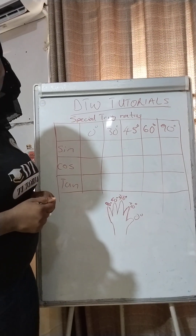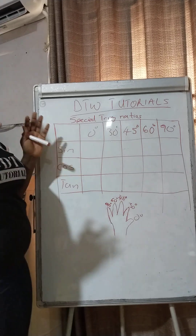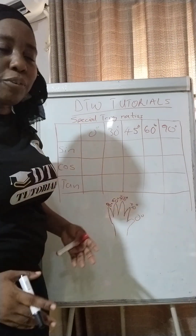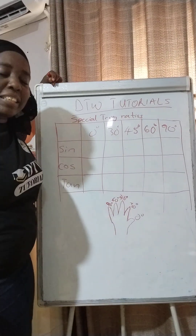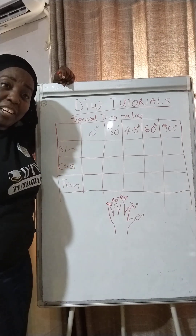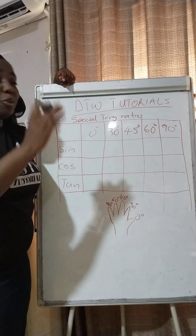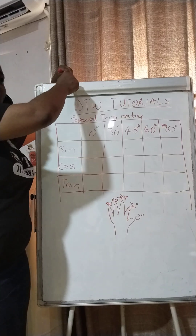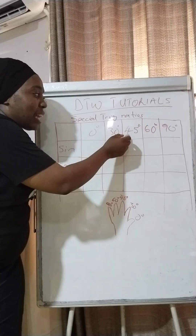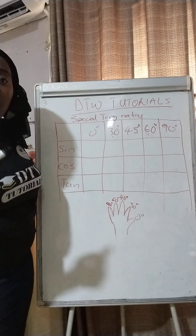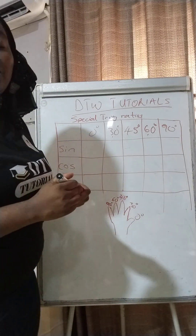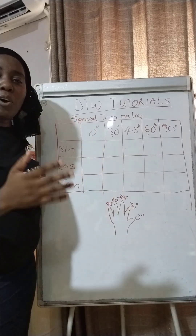Welcome to DTW Tutorials! In today's video I'm going to be treating special trig ratios — how to know your sine, cosine, and tan for 45, 60, and all. For your JAMB exam you don't use your scientific calculator, so you need to know these values. There are some very wonderful questions in physics and maths with things like sine 45 or cosine. There's a special trick I'm going to teach you today and it involves your right hand.